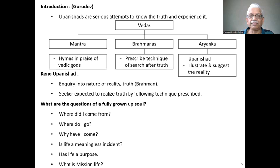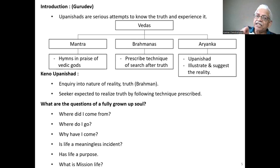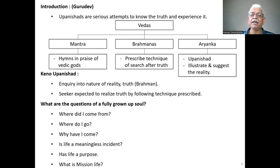The Talabhakara Brahmana consists of nine chapters. In the first eight chapters the Karma Kanda portion is discussed, and the ninth chapter is this Upanishad. Upanishads can come in either the mantra portion, Brahmana portion, or Aranyaka portion. Keno Upanishad comes in the Brahmana portion, which is why it is also given another name: Talabhakara Upanishad.